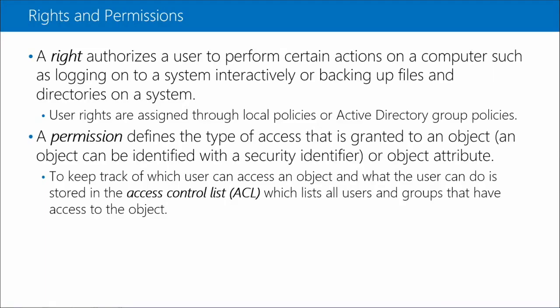Now let's talk about authorization - rights and permissions. Rights allow you to perform an action of some kind. Rights are assigned through local policies or Active Directory group policies, and they enable actions such as logging on locally versus remotely, or backing up files. Permissions define the type of access granted to an object, and this is tracked using an ACL - an access control list - which lists all users and groups that have access to the object, including the ability to read, write, create, or delete.